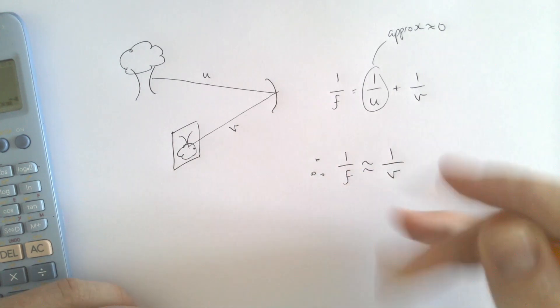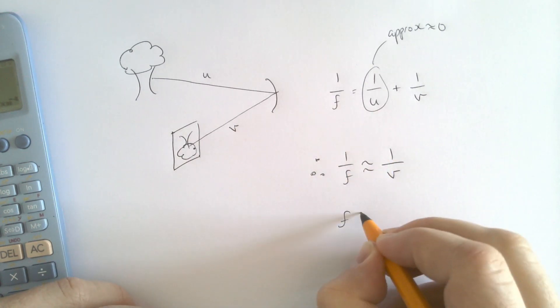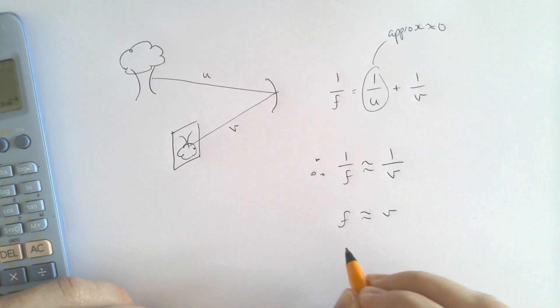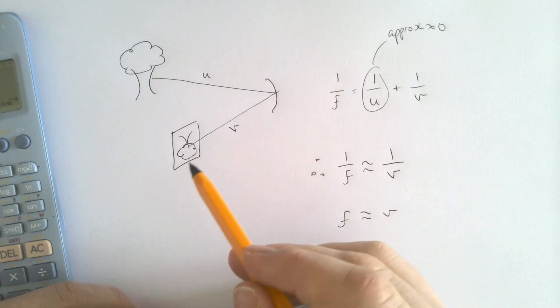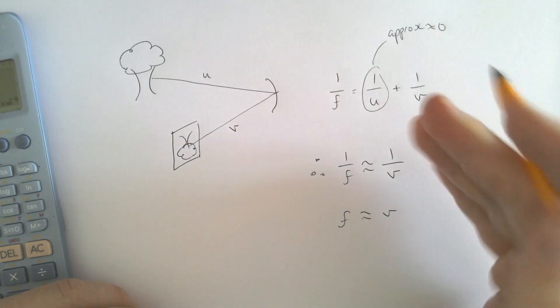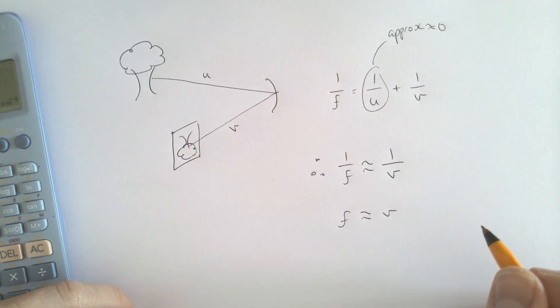So what we can say is this approximates to 0. Therefore, we end up getting that 1 over F is approximately 1 over V. And if you just flip them both, the focal length is approximately the image distance. That's why we do it. How do we do it? We focus on a faraway object. Why do we do it? So that we can basically say this is 0. Anyway, let's do the actual experiment.